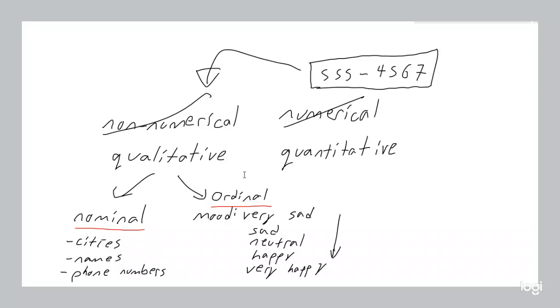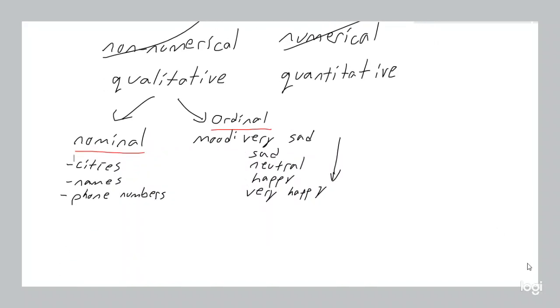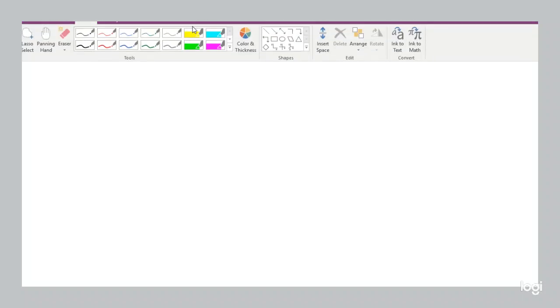Now when we look at quantitative data, there's actually two different ways we can separate quantitative data into different categories. One way is ratio versus interval.